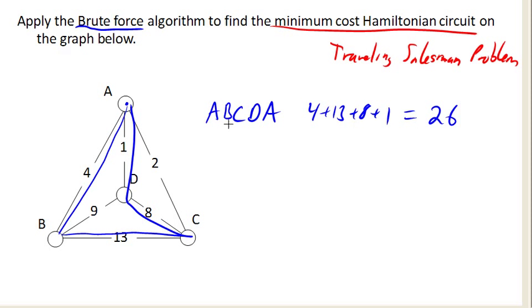Now let's look at another possibility. Another possibility would be to go from A to B to D, and from D down to C back up to A. So that was A, B, D, C, A.